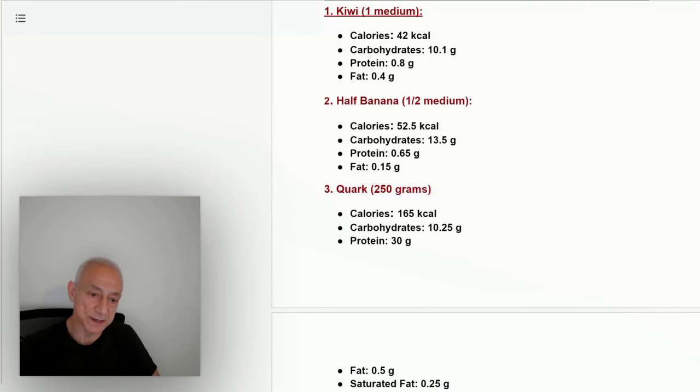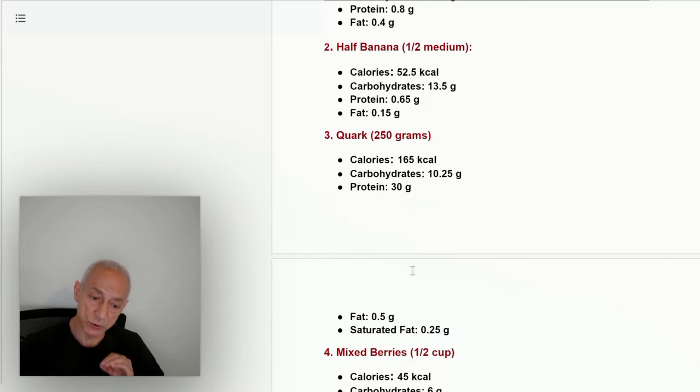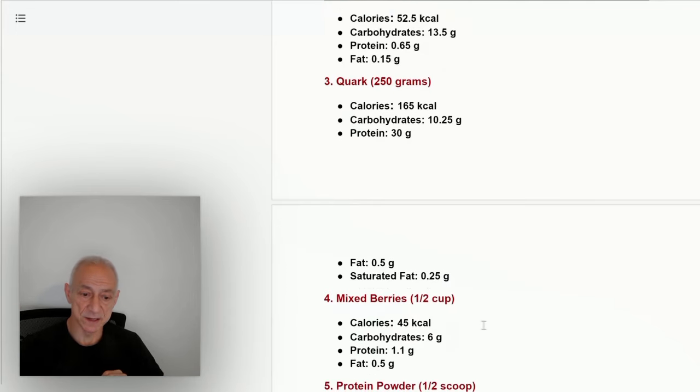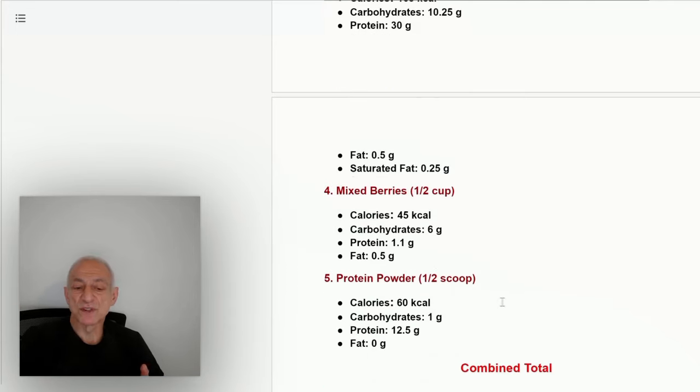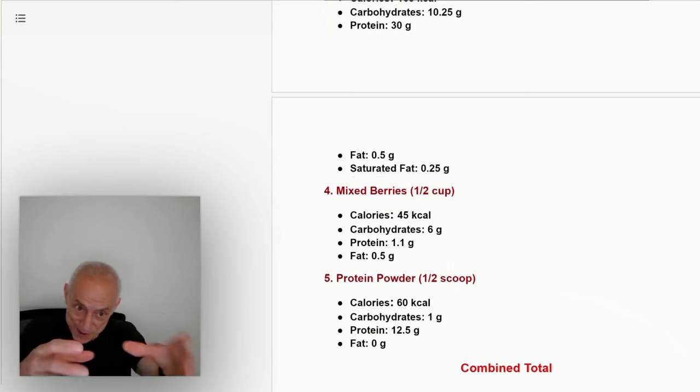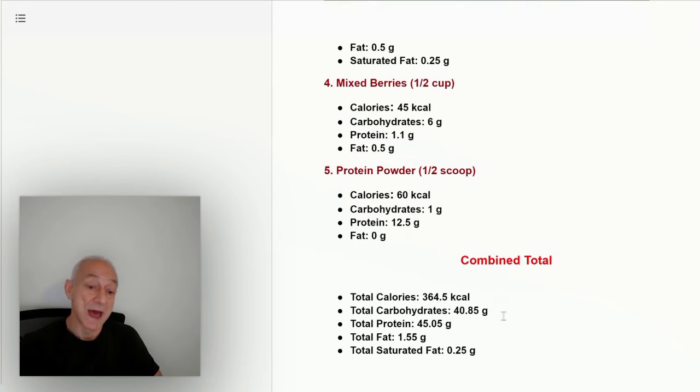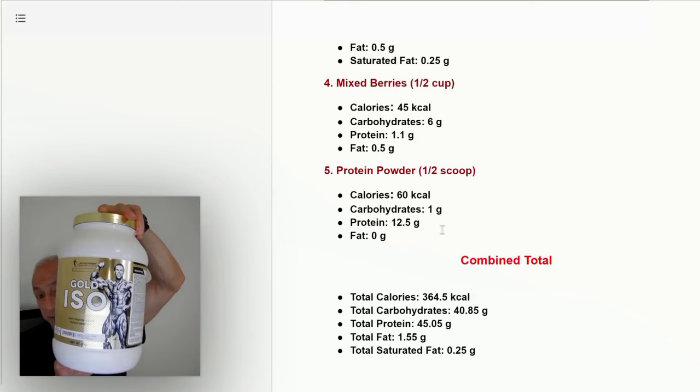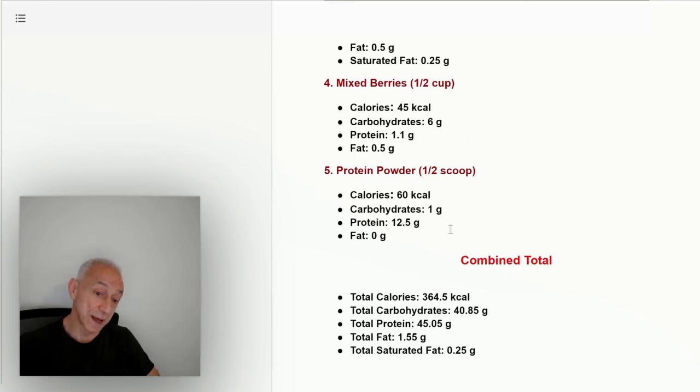And I put quark right here. I don't know if you know what quark is. I made a video on that. This is a non-fat quark, 165 calories, 10 grams carbs, has 30 grams of complete protein. Fat is nonexistent in there. This is like my fruit salad mixed with this protein quark. And inside the quark, I put another half a scoop of my protein powder, 60 calories, 12.5 grams of protein.